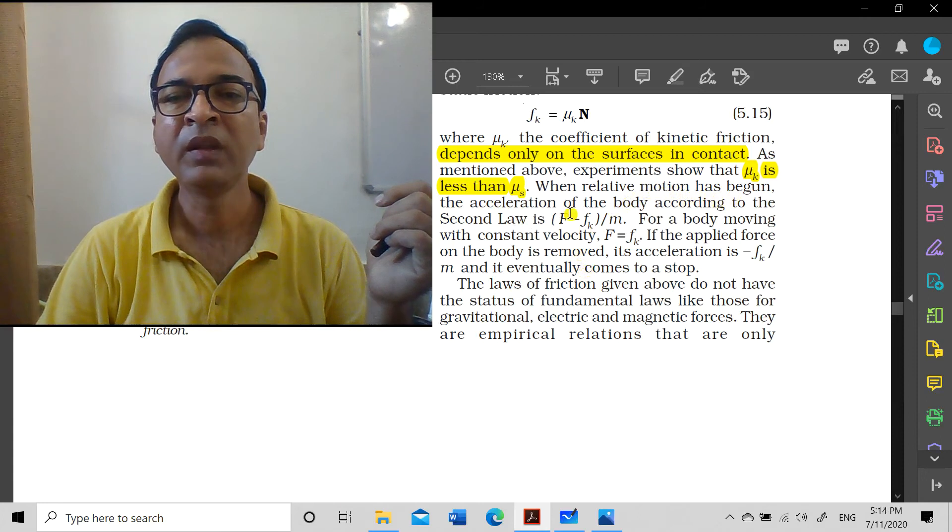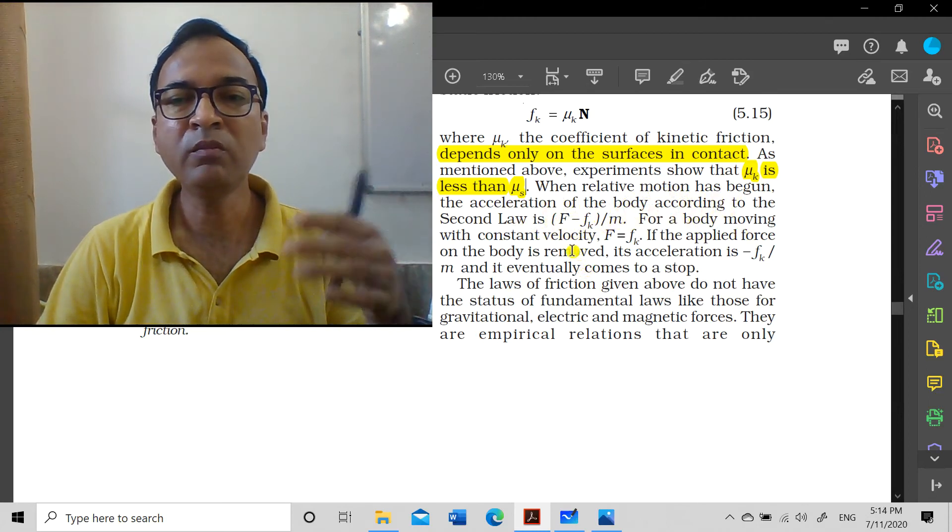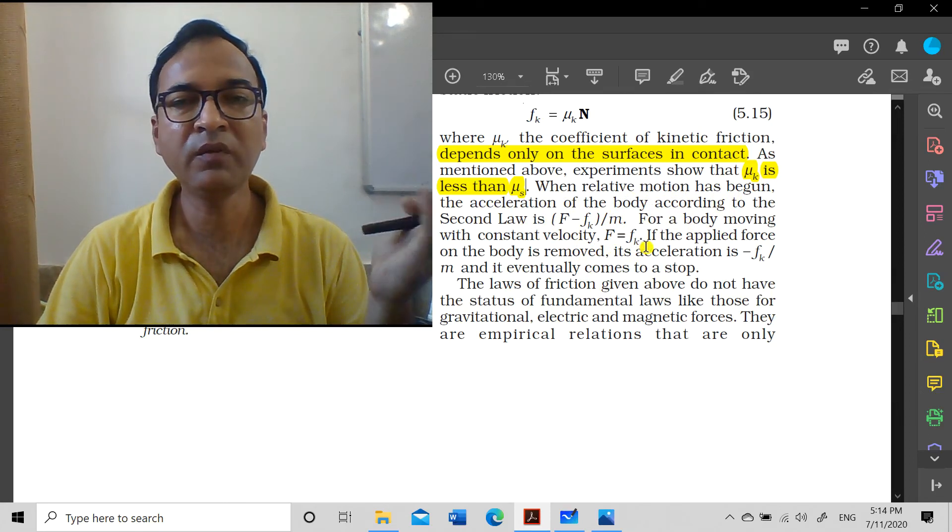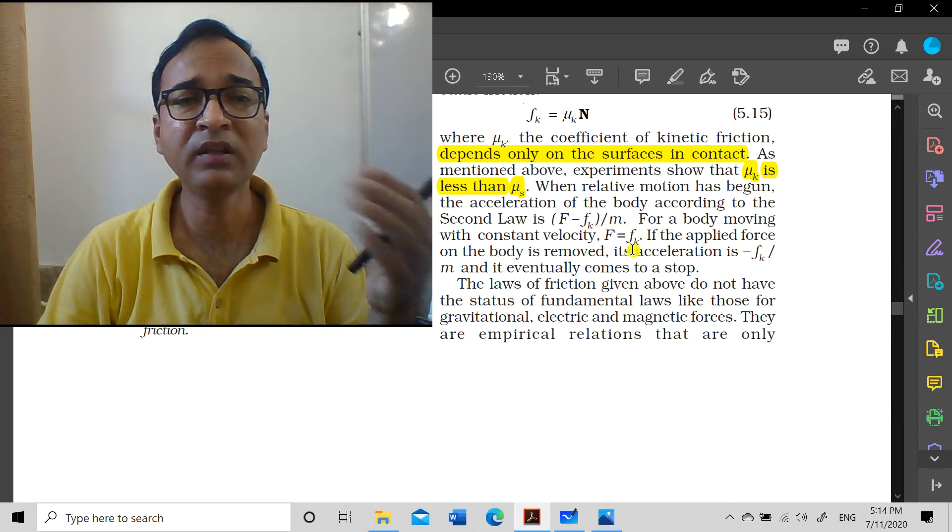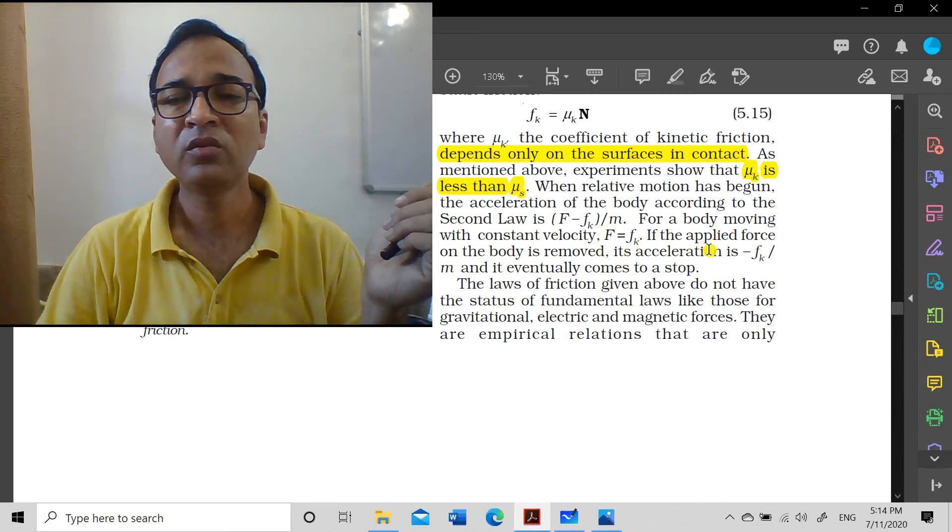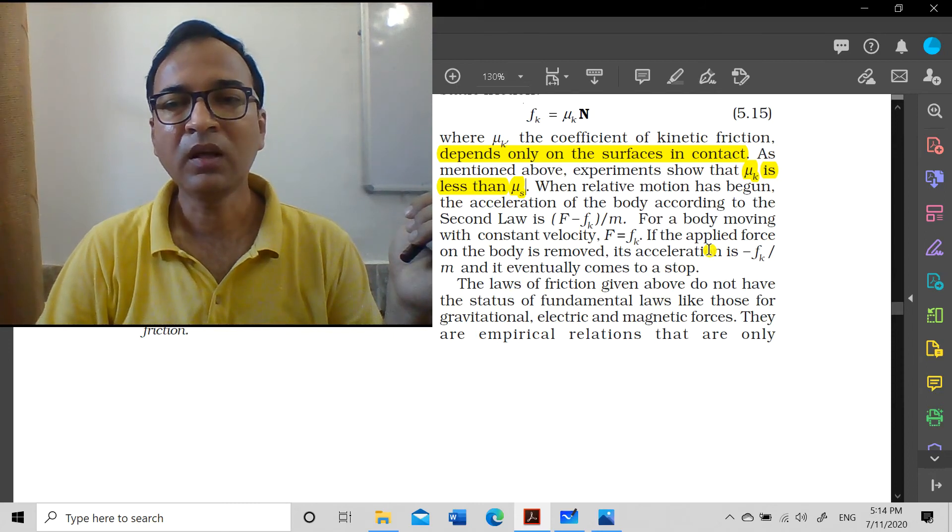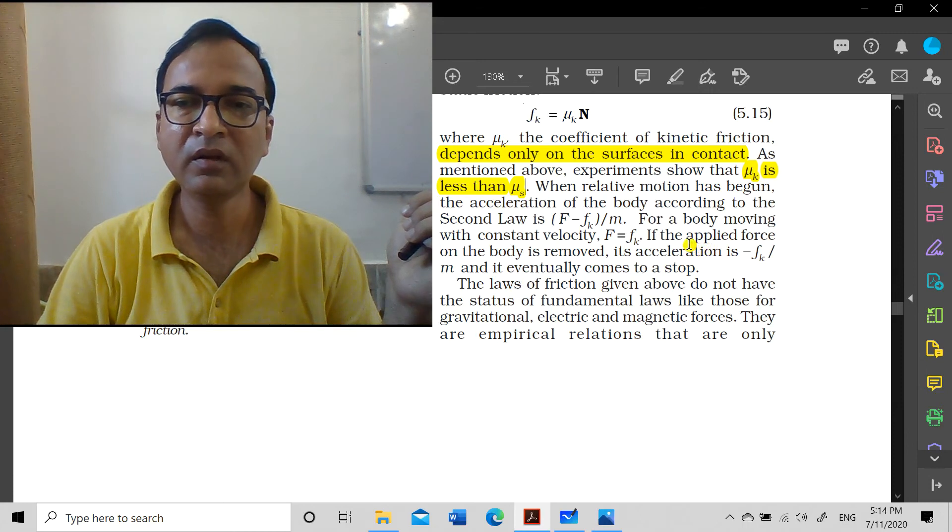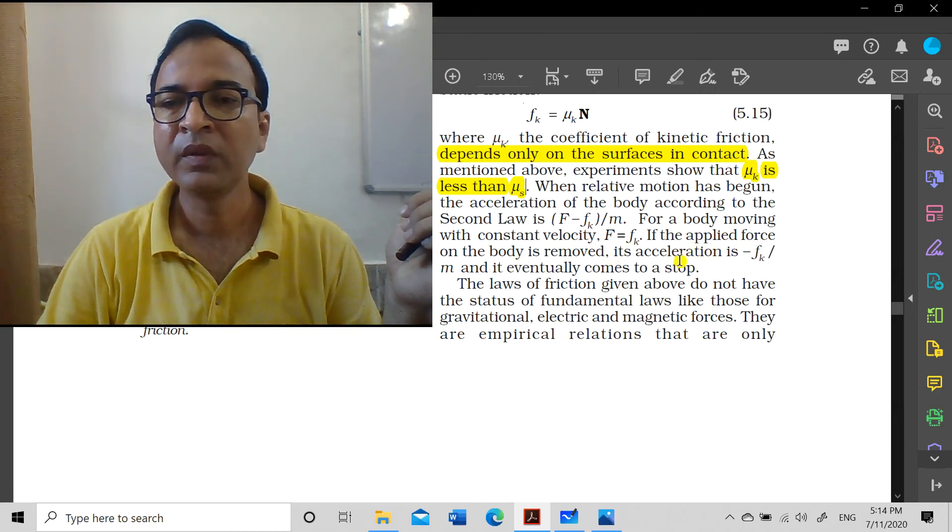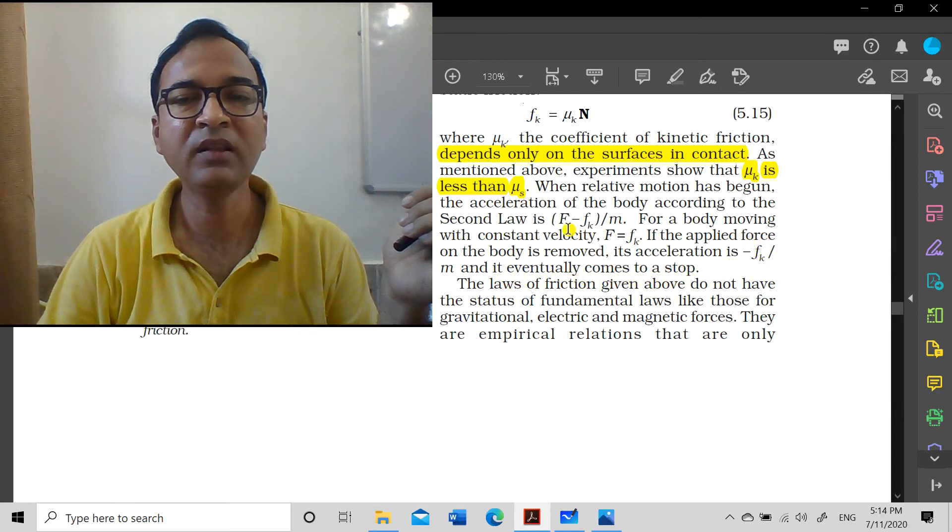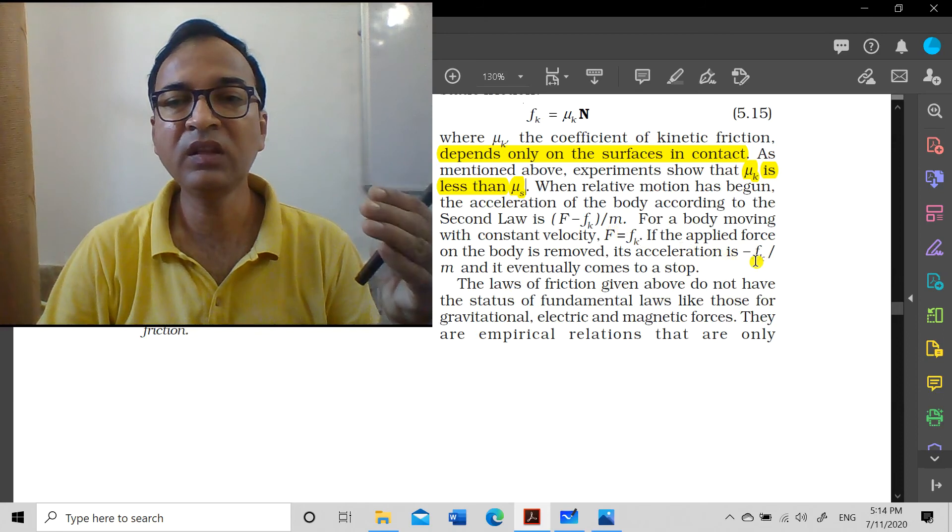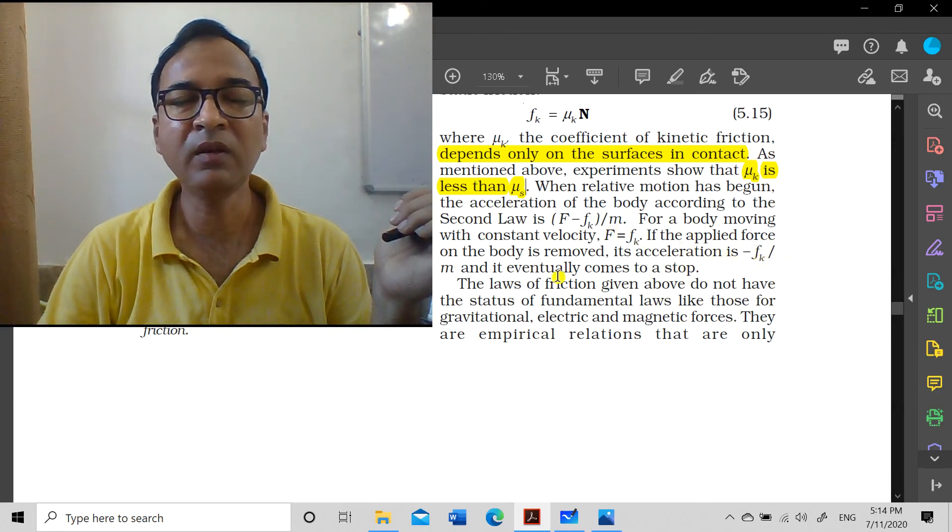You'll be asked in exams to relate mu k, mu s, and mu r (rolling friction) - mu r is even smaller. When relative motion has begun, the acceleration of the body according to the second law is (F - fk)/m, the net force upon mass. For a body moving with constant velocity, F equals fk. These are small points on which many types of competition questions are made. I've started a competition exercise for 11th grade too, like the one for 12th. If the applied force on the body is removed, its acceleration becomes minus fk/m - only this remains - and it eventually comes to a stop because it's in opposition.